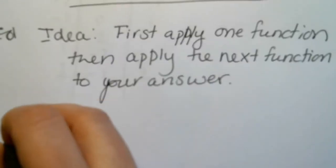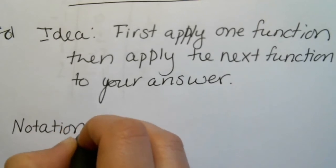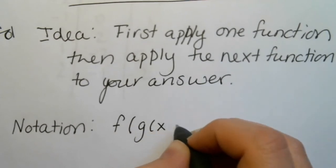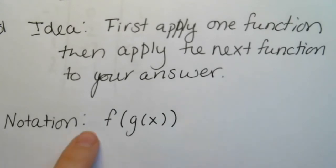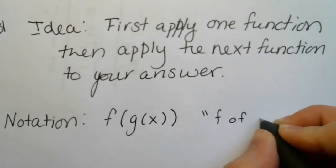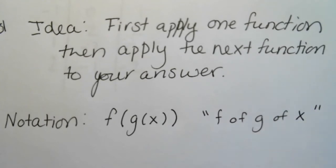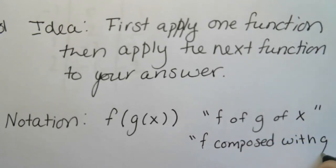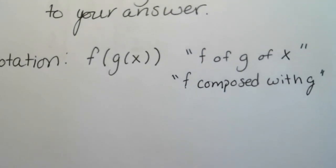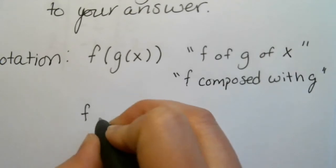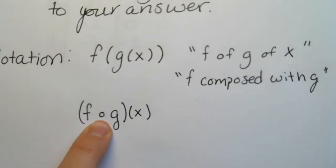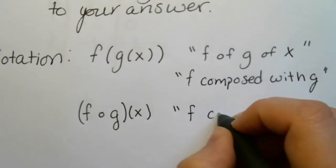There are two different types of notation. One notation looks like f(g(x)) — this is function notation where you have g of x inside f of x, and you would say 'f of g of x' or 'f composed with g.' The other notation uses a little open circle and looks like f∘g, and you would also say 'f composed with g.'